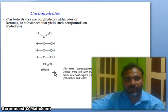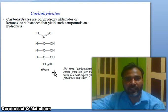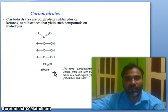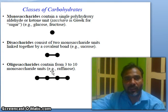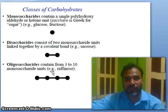Carbohydrates are polyhydroxy aldehydes — 'polyhydroxy' means many OH groups — polyhydroxy aldehyde or ketone, or substances that yield such compounds on hydrolysis. For example, ribose. Now, classes of carbohydrates: monosaccharides contain a single polyhydroxy aldehyde or ketone unit. 'Saccharo' means sugar.